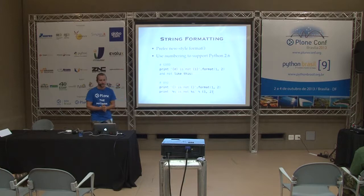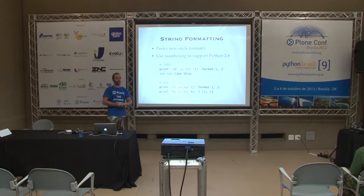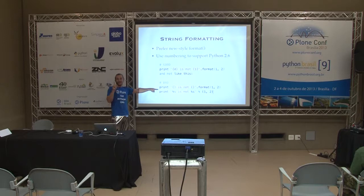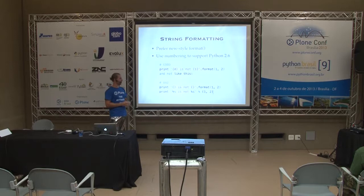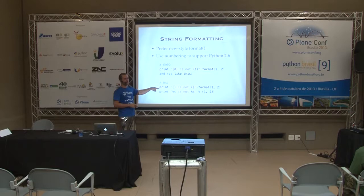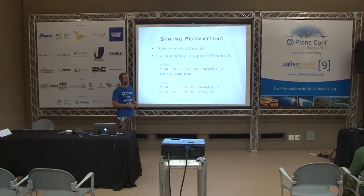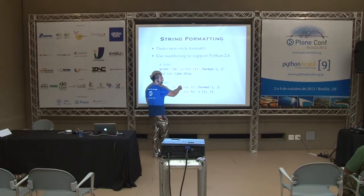Moving on to string formatting, we prefer the new style format. This is good and this is bad. Do we want to drop Python 2.6 support so we can use this? But then Plone API cannot be used in old installations that use 4.2. I think I would actually prefer to have this as a recommendation — if you need to support Python 2.6 you can use the old way. The 2.7 way is better because you can add more items without changing the numbers, so it's less noise in your diff.